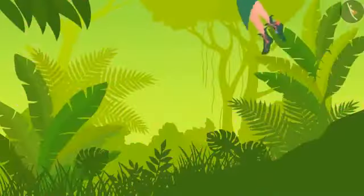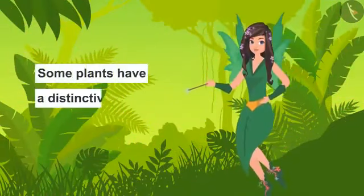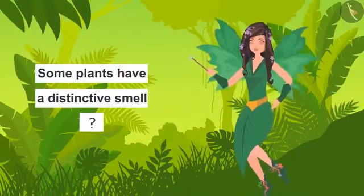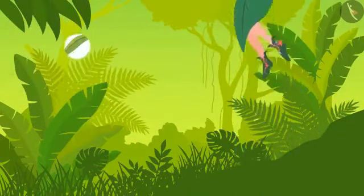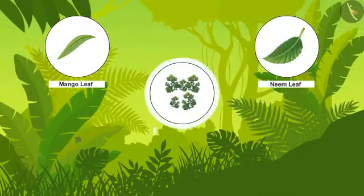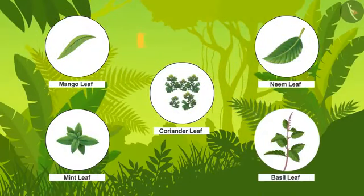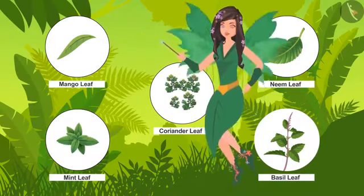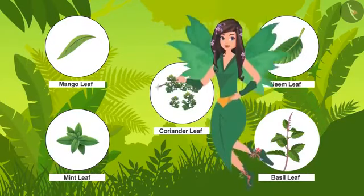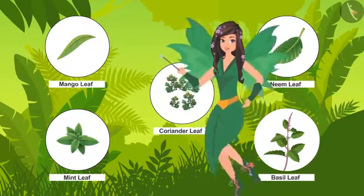Alright children, have you ever noticed that some plants have a distinctive smell? With the help of an elder, collect leaves of plants like mango, neem, coriander, mint, and basil. Now smell these. Don't they all smell different? Are some of these leaves used while cooking at your home? Do ask your parents.